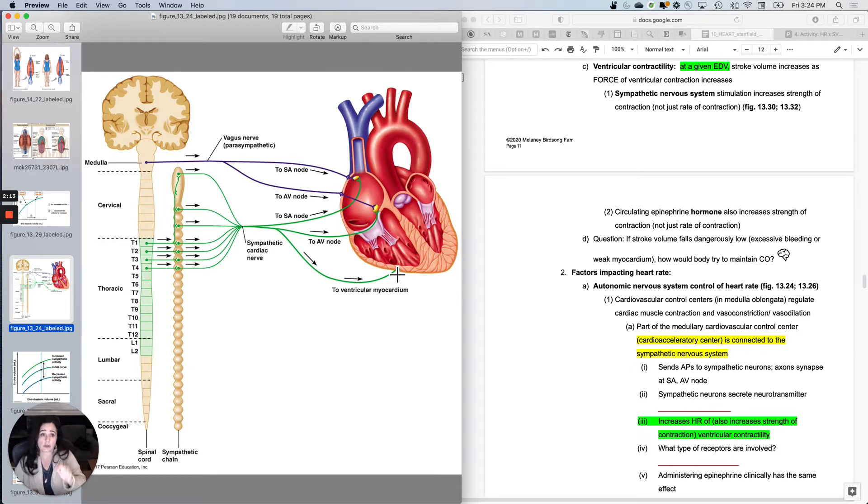The sympathetic nervous system stimulation increases the strength of contraction, not just the rate of contraction. And this is holding the volume constant. So whatever was in there, either I could squeeze it like this, or with the sympathetic nervous system, I could squeeze really, really hard. So it increases the strength of contraction, not just the rate of contraction.